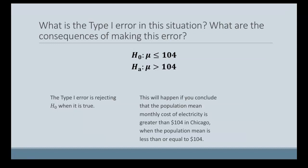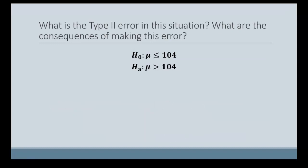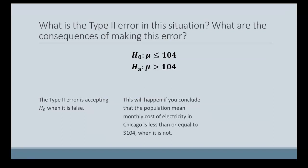So that would be a Type I error. A Type II error in this situation, that's when we accept the null hypothesis even though it's false. So what your conclusion would be is that the population mean monthly cost of electricity in Chicago is less than or equal to $104 when it's actually not, it's actually greater than $104.